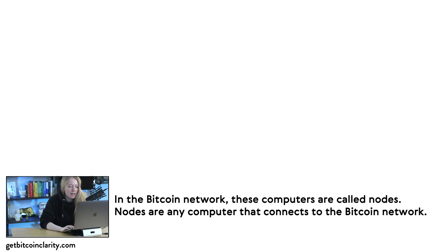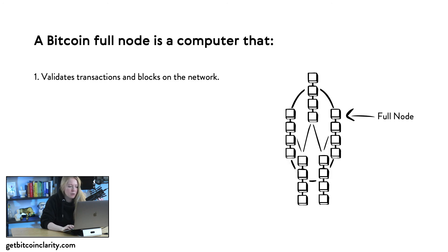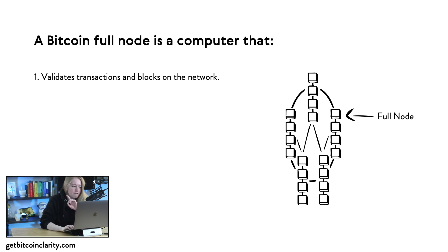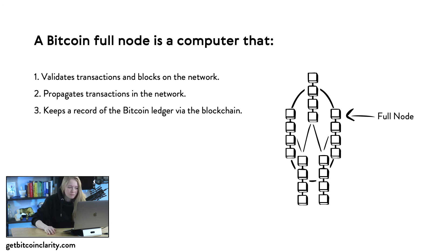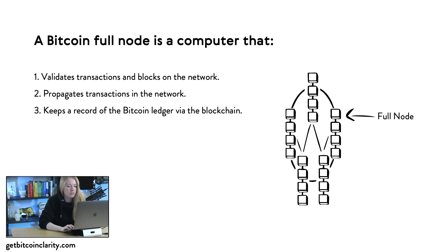Bitcoin — with a capital B, meaning the Bitcoin network — is really just a network of computers connected all over the internet. We call these computers nodes. A Bitcoin full node is a specific type of node that does three things: it validates transactions and blocks, it propagates transactions from node to node, and it keeps a record of the Bitcoin ledger — the ordered history of transactions in the blockchain.